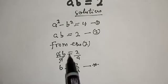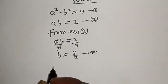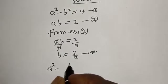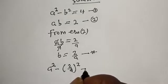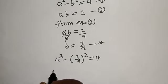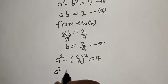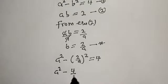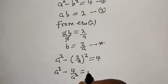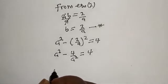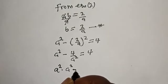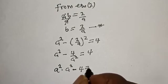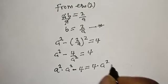Now, let's substitute for b in equation 1. That is, a squared minus (2 over a) squared is equal to 4. Then this becomes a squared minus 4 over a squared is equal to 4. Now, multiplying all through by a squared, we have a squared times a squared minus 4 is equal to 4 times a squared.